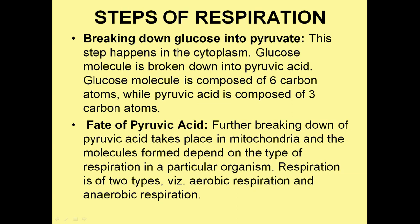What are the steps of Respiration? First, glucose is broken down into pyruvate in the cytoplasm. Glucose is composed of 6 carbon atoms, while pyruvic acid is composed of only 3 carbon atoms. Then the pyruvic acid is further broken down in mitochondria, and the molecules formed depend on the type of Respiration in that particular organism. Depending upon the fate of pyruvic acid, Respiration is categorized into two types: aerobic Respiration and anaerobic Respiration.